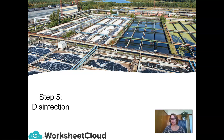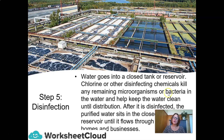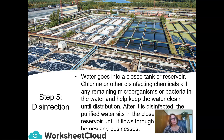Step five is disinfection. When you disinfect something, you make it pure and clean. Water goes into a closed tank or reservoir, and chlorine or other disinfecting chemicals kill any remaining microorganisms or bacteria in the water. This also helps keep the water clean until distribution — when it comes back to your homes and your taps. After disinfection, the purified water sits in the closed tank or reservoir until it flows through pipes to your homes, schools and businesses.